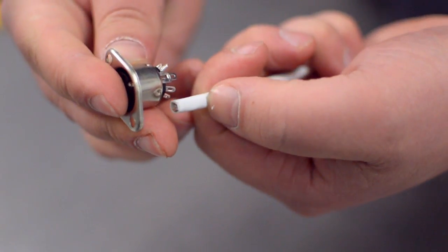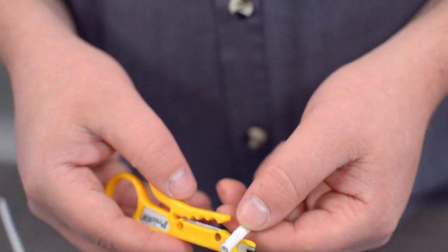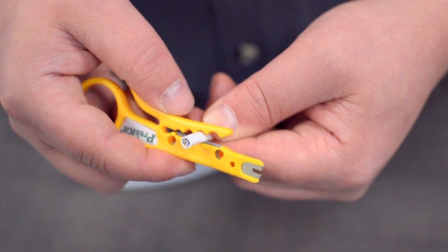Measure how far you will need to strip back the jacket by holding the cable up against the base of the connector. Then strip the cable jacket using the wire strippers.